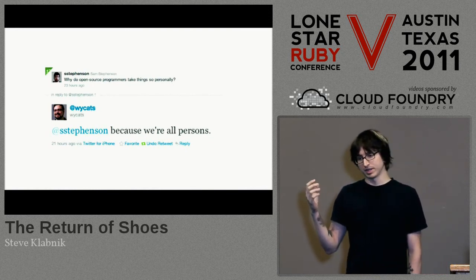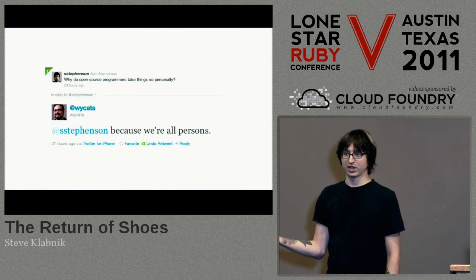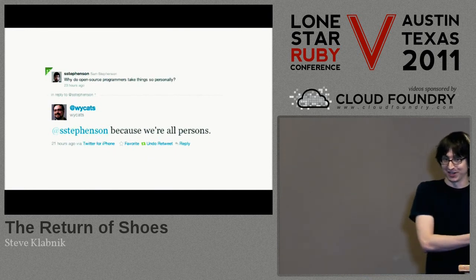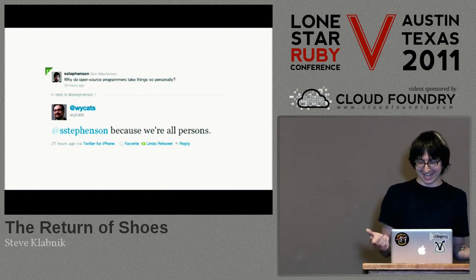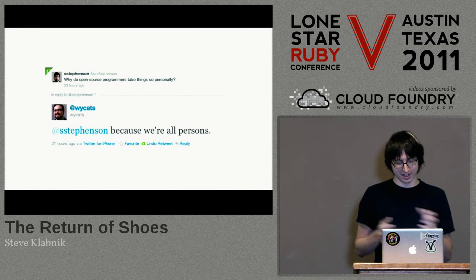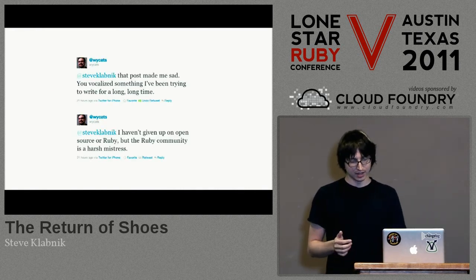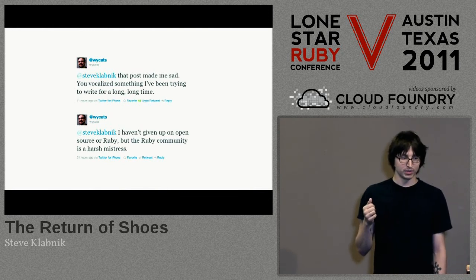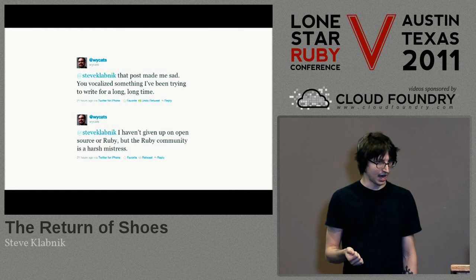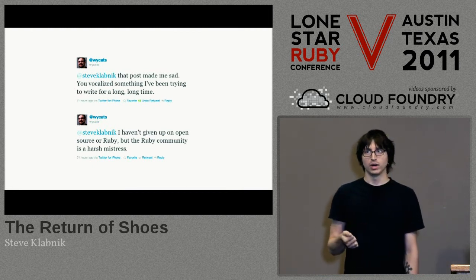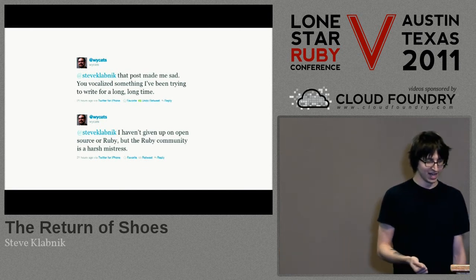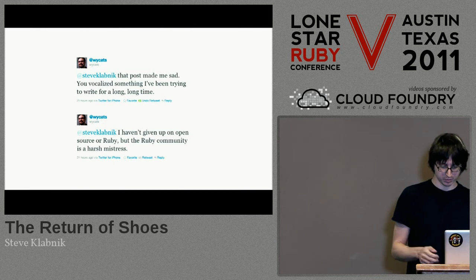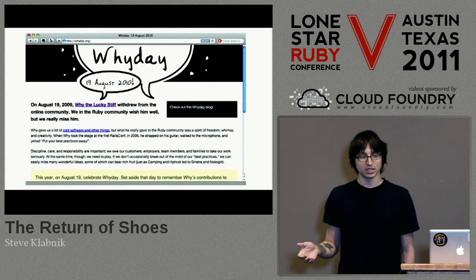We'd like to think programming is a meritocracy — you built a steam engine, I built a car, sorry buddy you're out of business, but we're all friends. We have to be thoughtful about the people we're disrupting when we do it. Yehuda also said to me: that post made me sad because you've vocalized something I've been trying to write for a long time. I haven't given up on open source or on Ruby, but the Ruby community is a harsh mistress. This makes me wonder: what kind of community are we building for our programmer children in the future? I don't really have any answers, but I'd like to start focusing on the positive.